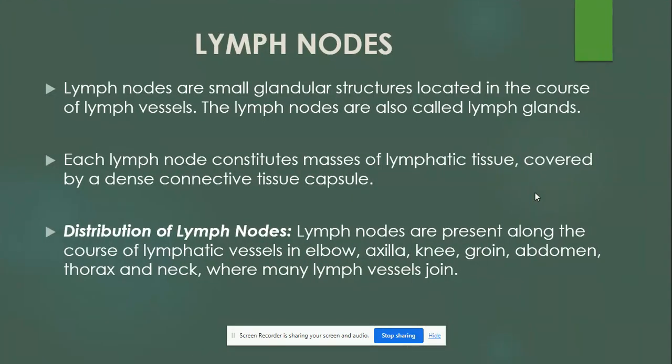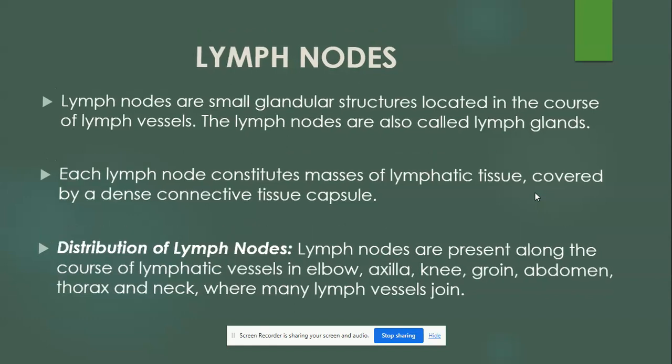Now we will look at lymph nodes. Lymph nodes are small glandular structures located in the course of lymph vessels, also called lymph glands. Each lymph node consists of a mass of lymphatic tissue covered by a dense connective tissue capsule. Lymph nodes are distributed along the course of lymphatic vessels — in the elbow, axilla, knees, groin region, abdomen, thorax, neck, and wherever many lymph vessels join up.